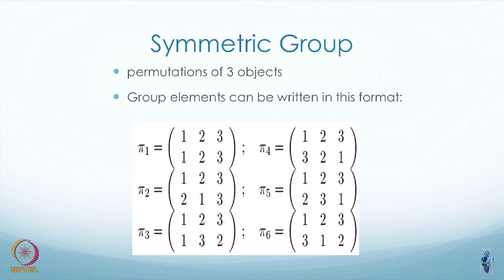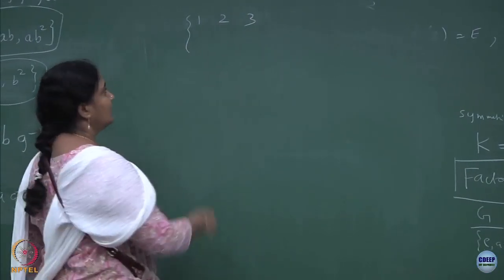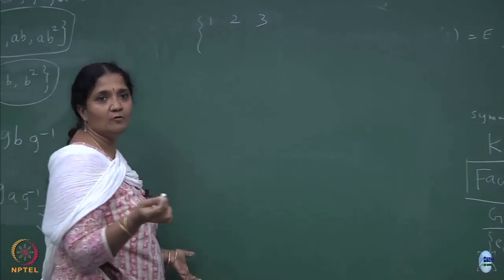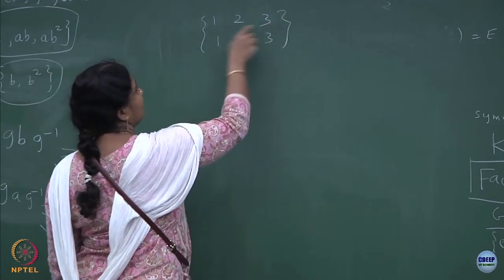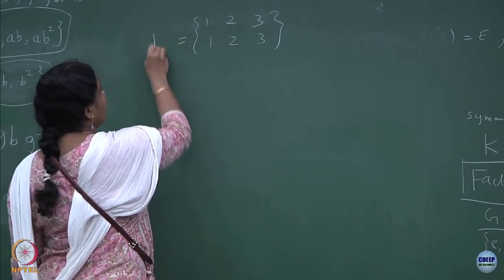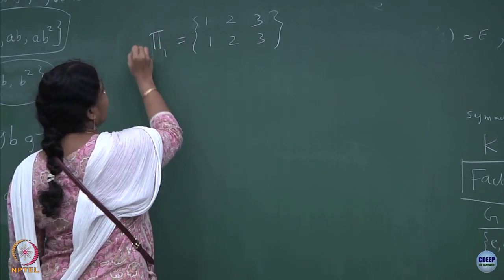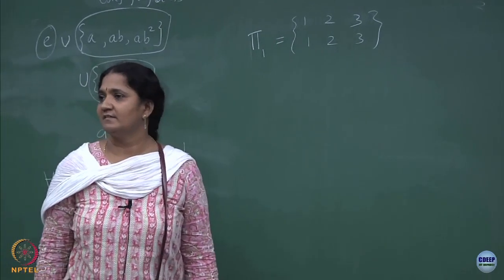First of all, how do we write these group elements for permutations of 3 objects? You start by saying that object 1, object 2, object 3 do not permute at all — the initial configuration equals the final configuration. I will call this phi 1 (or pi 1); it is the identity element in this set.